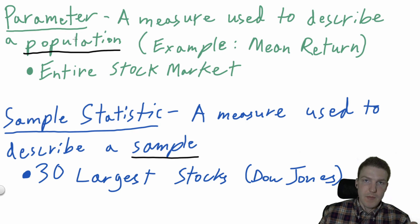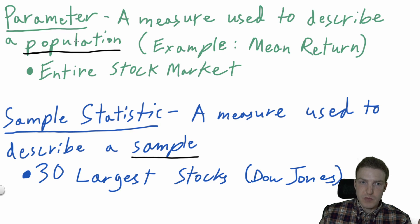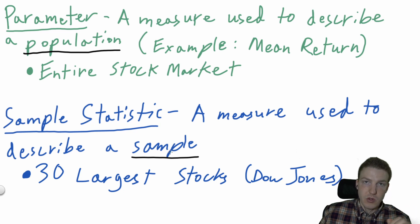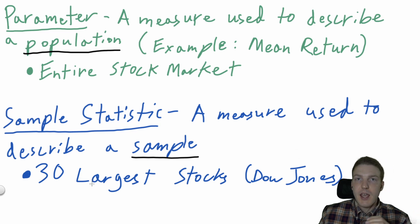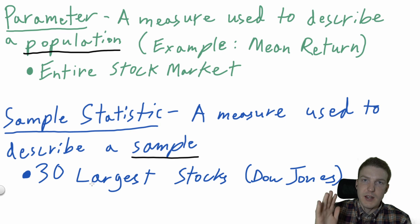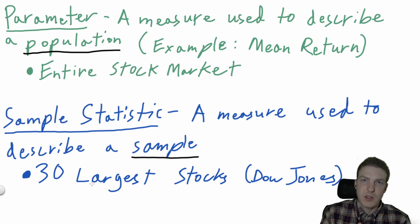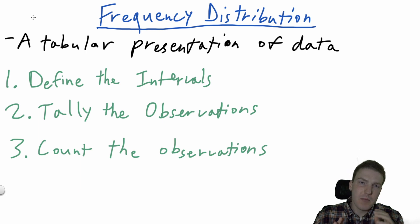In finance, we're typically looking at parameters and sample statistics. A parameter is a measure used to describe a population — usually mean returns or standard deviation of mean returns for, say, the entire U.S. stock market. A sample statistic is a measure used to describe a sample. A good example is the Dow Jones — we look at the 30 largest stocks as an indication of how the overall stock market did on any given day, rather than the average mean return of the whole U.S. market.